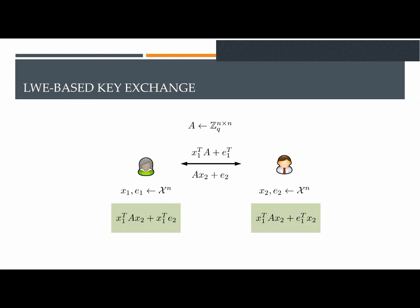To compute the common secret, each party takes the inner product of its secret vector and the received message. This allows them to compute the quantity x1·A·x2 plus some noise, that is different for each party. Hence, after this first round, the parties have an approximate common key agreement.